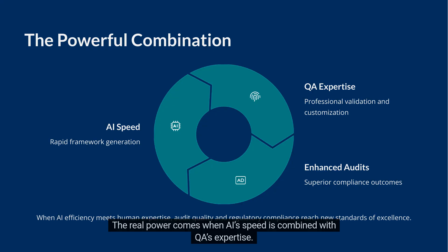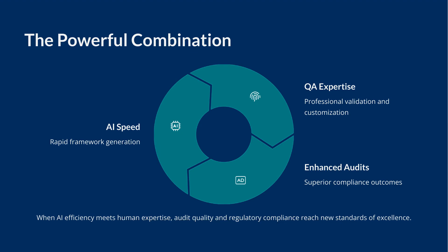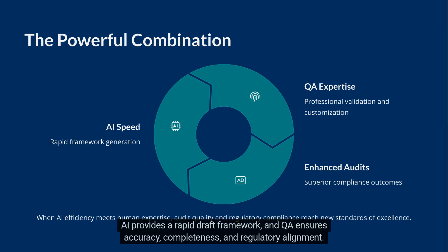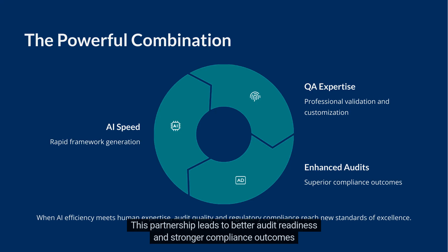The real power comes when AI's speed is combined with QA's expertise. AI provides a rapid draft framework, and QA ensures accuracy, completeness, and regulatory alignment. This partnership leads to better audit readiness and stronger compliance outcomes.